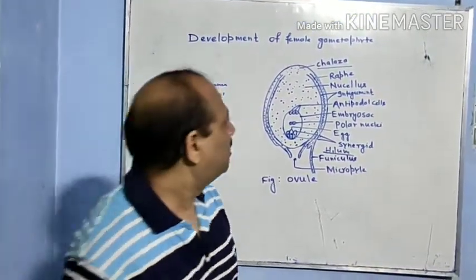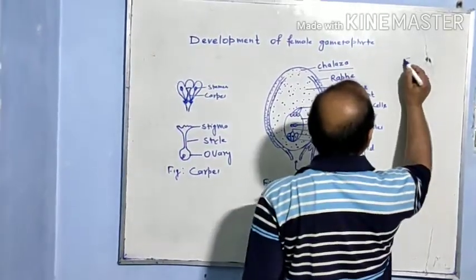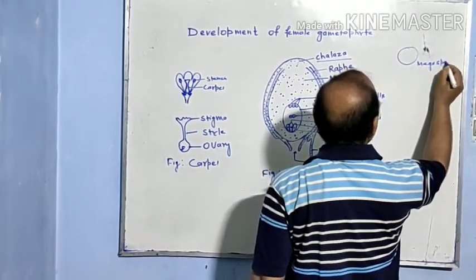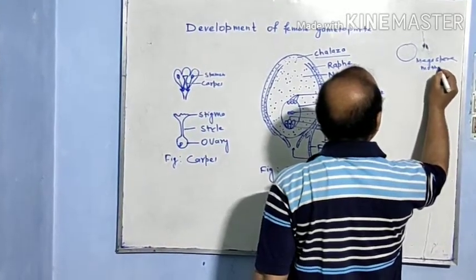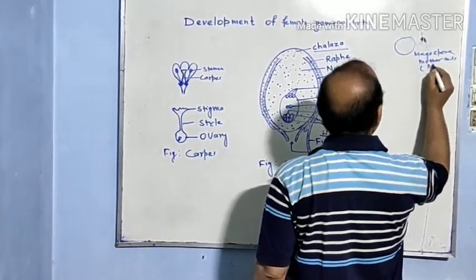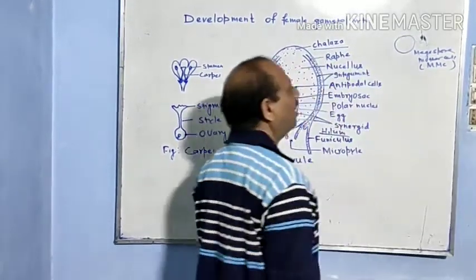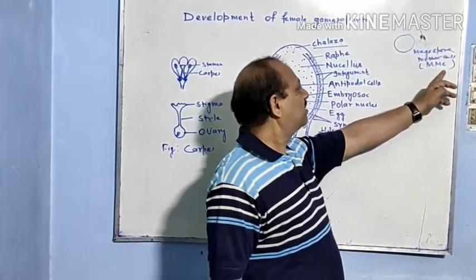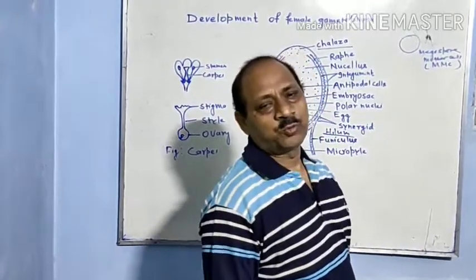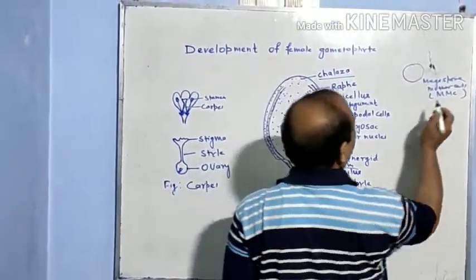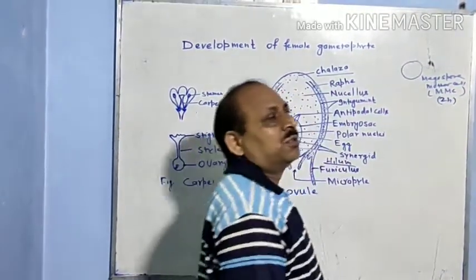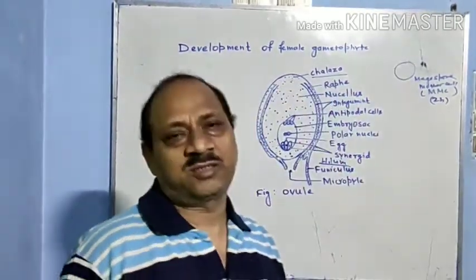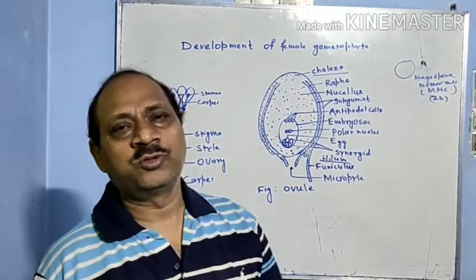The body of the ovule is known as nucellus. The hypodermal cell of the ovule becomes prominent and forms the megaspore mother cell (MMC). The megaspore mother cell is a diploid cell, meaning it contains two sets of chromosomes.